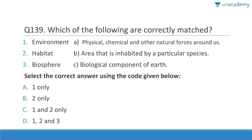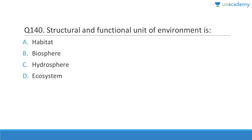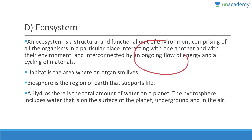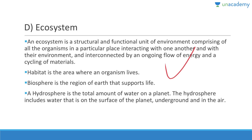Environment is the physical, chemical, and other natural forces around us. Habitat is the area inhabited by a particular species. Biosphere is the biological composition where hydrosphere, lithosphere, and atmosphere meet. The structural and functional unit of environment is the ecosystem — comprising all organisms in a particular place interacting with one another and with their environment, interconnected by ongoing flow of energy and cycling of material.